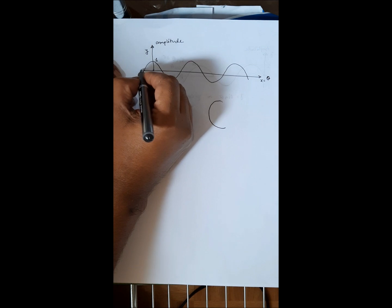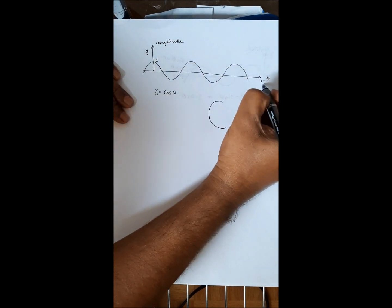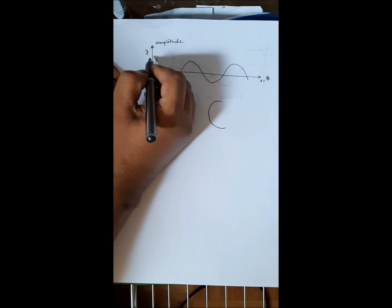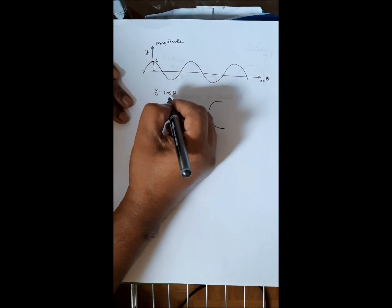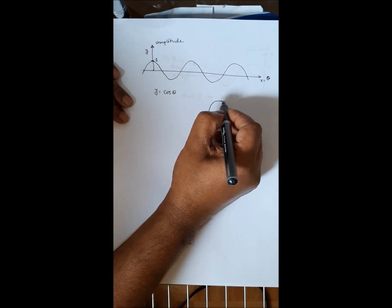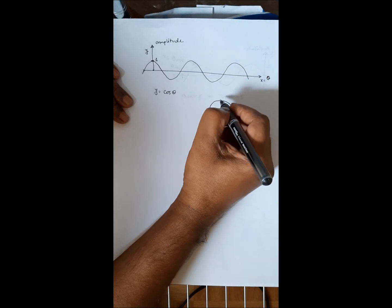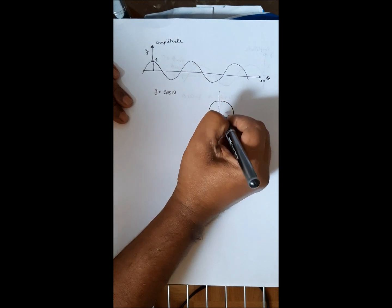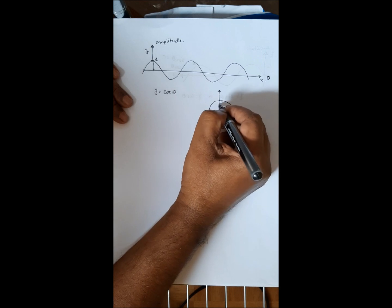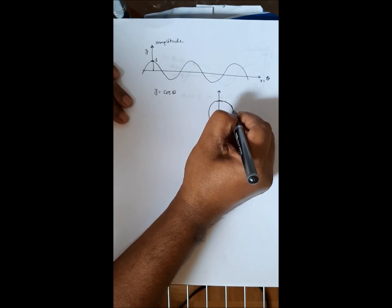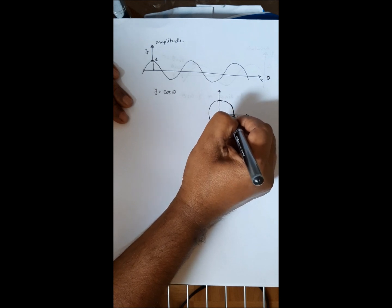Let us draw a sinusoid with its argument and amplitude. I put argument theta on the x-axis and amplitude on the y-axis. The amplitude of this particular wave is 1, so the mathematical expression will be y = cosine(theta). Now if I want to represent this sinusoid in polar form, the amplitude will be on the radius — on the perimeter of the circle — and the phase angle is in this direction.